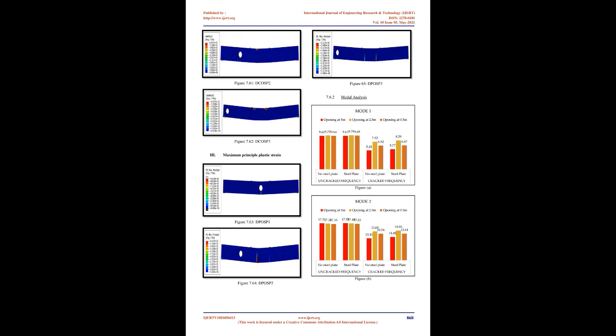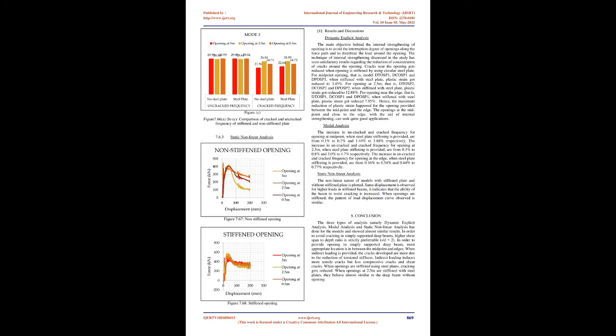Modal analysis showed a larger reduction in frequency when opening is provided at the center of the beam. Opening at the center adds distortion because there is already higher midpoint bending moment. Opening near the edge causes more damage than opening at 2.5m, due to instability from mass and stiffness changes. It is better to provide opening somewhere between the center and the edge.